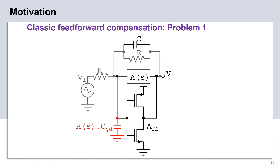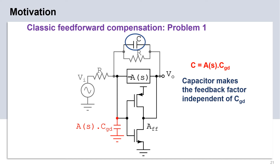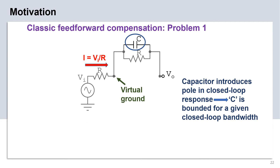Now, as we mentioned a few slides ago, a capacitor C can be placed in the feedback path to cancel the effect of the parasitic Miller-amplified CGD. But C must be equal to CGD multiplied by the slow path gain. This requires a very large capacitor C in the feedback path. However, we cannot arbitrarily increase the feedback capacitor C because it introduces a pole in the closed-loop response. Thus, for a given closed-loop bandwidth of the amplifier, the size of the capacitor C is upper bounded, which puts an upper bound on the parasitic capacitor that can be tolerated at the virtual ground node. This, in turn, limits the maximum achievable bandwidth of the classical feed-forward architecture.